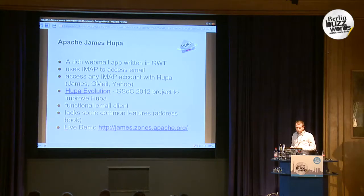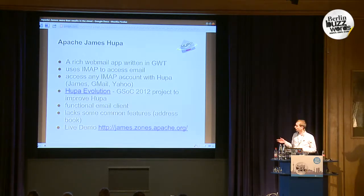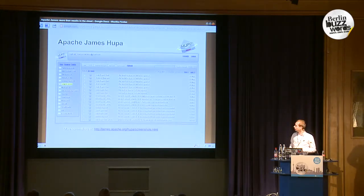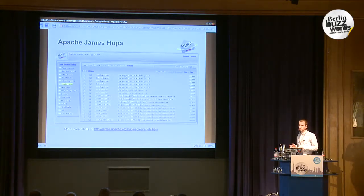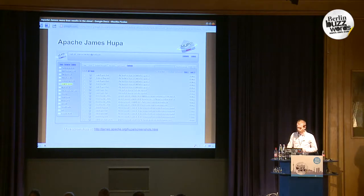Another Apache James component is Hoopa. Hoopa is a rich web mail interface written in the Google Web Toolkit. We have a Google Summer of Code project named Hoopa Evolution, and a student will work to improve Hoopa. It looks like this: you can access your Gmail — every email account can be accessed by Hoopa. So if you have an IMAP account, you can use Hoopa as a web interface to that account.